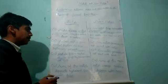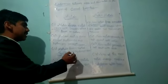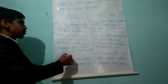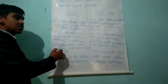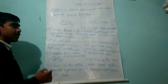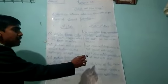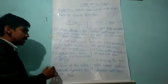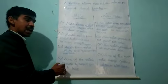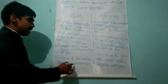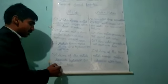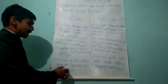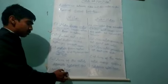Metals form metal salt and hydrogen gas with acid. When metals react with acid, they form salt and release hydrogen gas. But nonmetals generally do not react with acid.